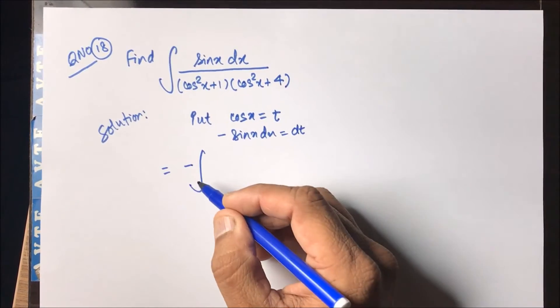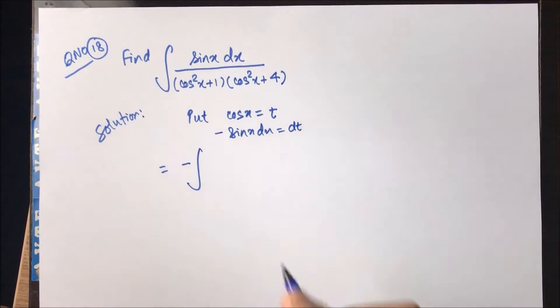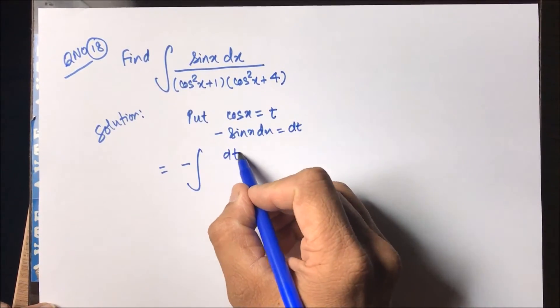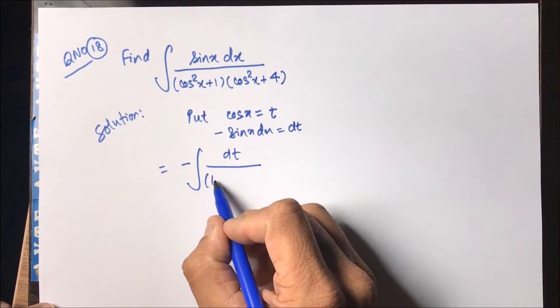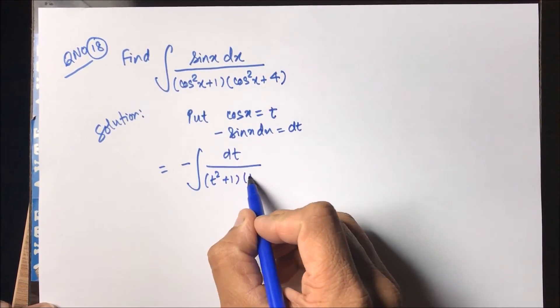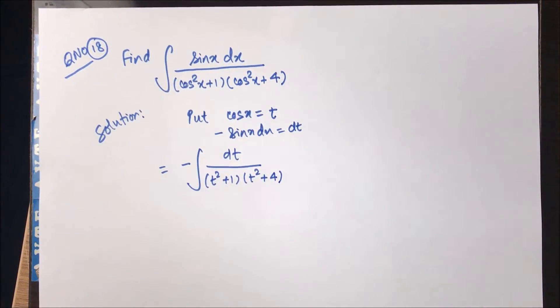In terms of t, it is minus dt upon t square plus one into t square plus four. This is what we get.